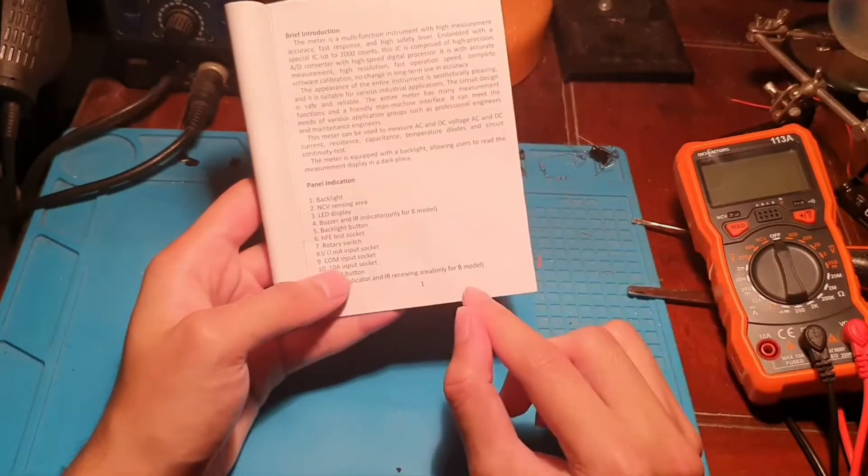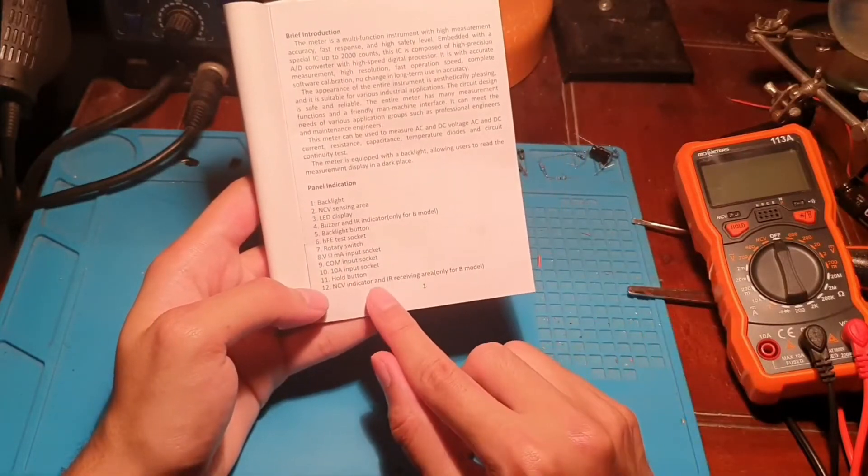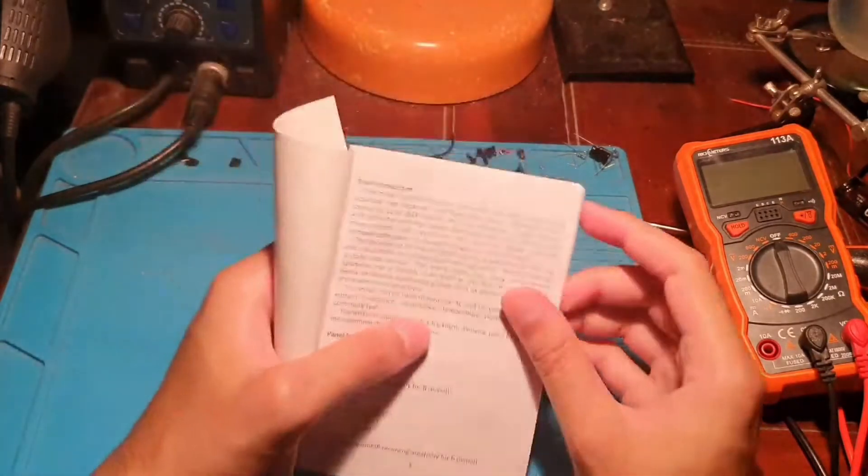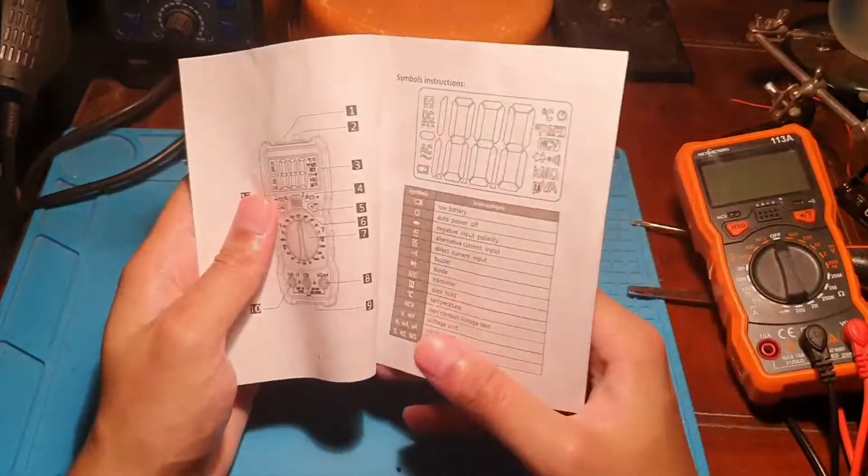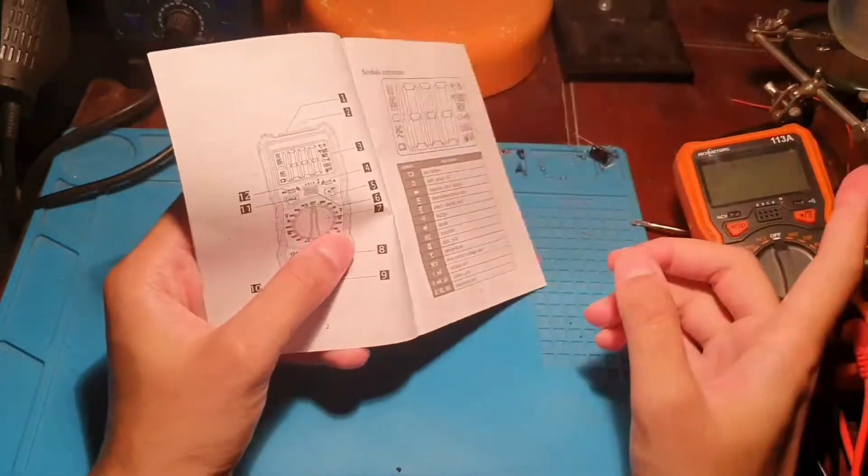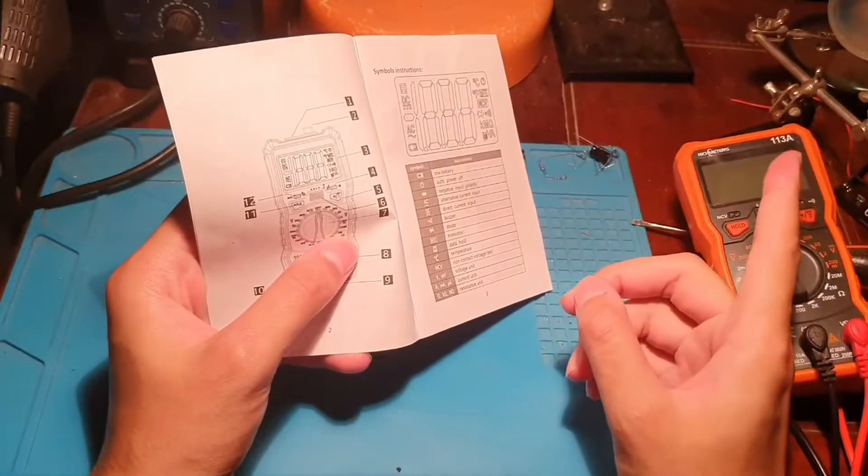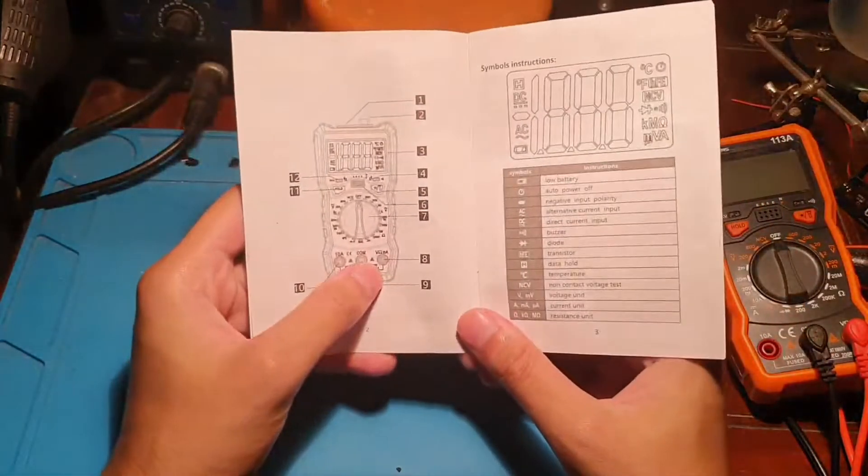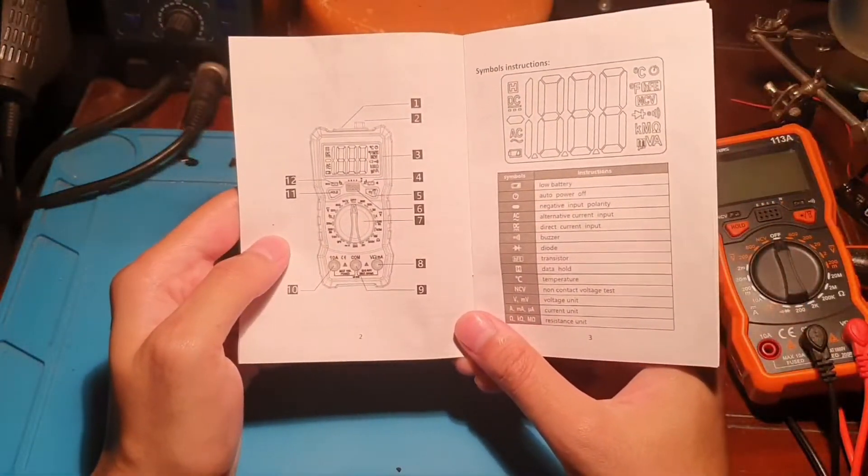This is only for the B model - the NCV indicator and IR receiving area. Mine is model A, 113A. The B model would be 113B, sort of stuff like that.